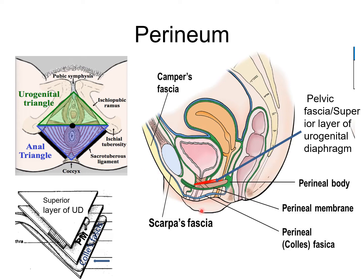Colles' fascia is a direct continuation of the membranous layer of superficial fascia of the abdomen — that is, Scarpa's fascia. In a person lying down, this superficial fascia will be the most inferior layer in the standing position. This fascia is the perineal fascia, or Colles' fascia — the most inferior of the three fascias.